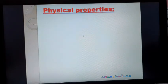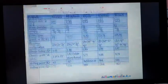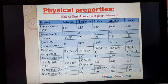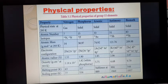Now we are going to discuss the physical properties of nitrogen group elements. The elements present are nitrogen, phosphorus, arsenic, antimony, and bismuth. In terms of physical state, nitrogen is a gaseous non-metal, while all others — phosphorus, arsenic, antimony, and bismuth — are in the solid state.